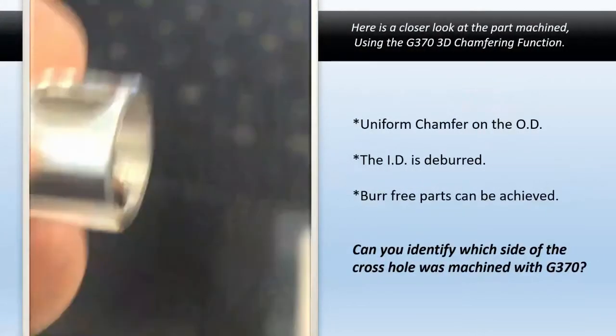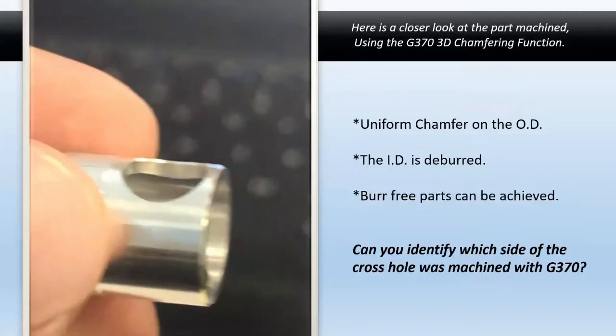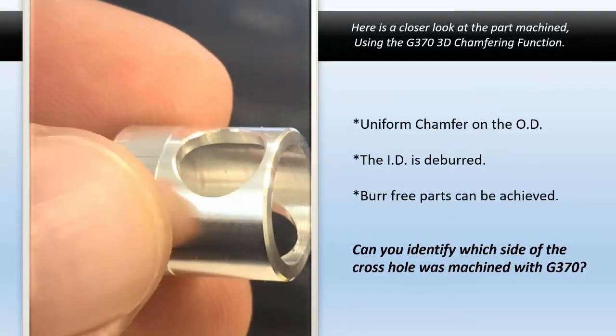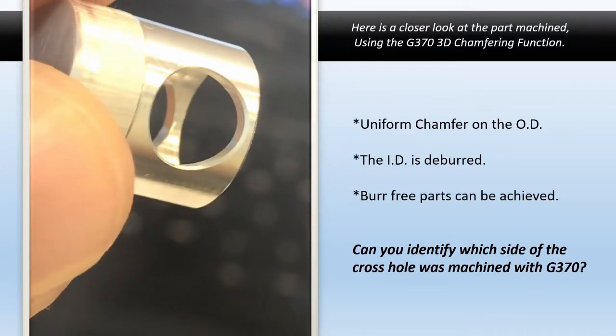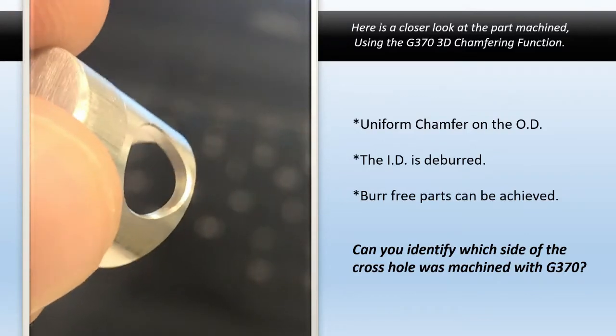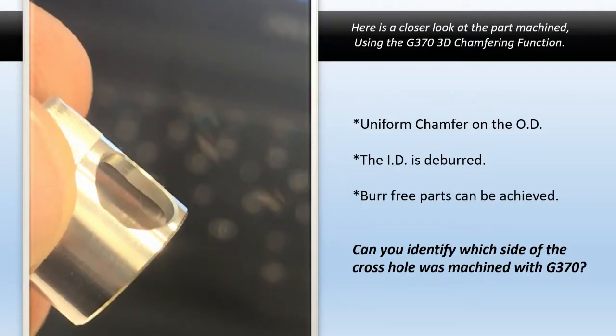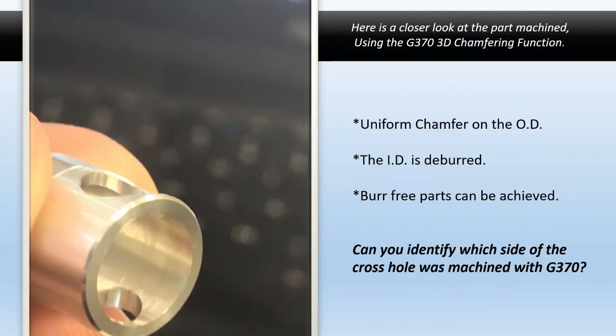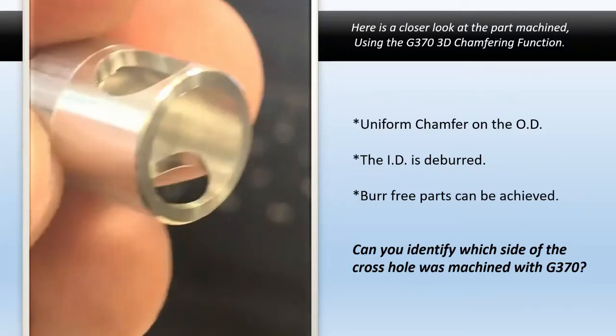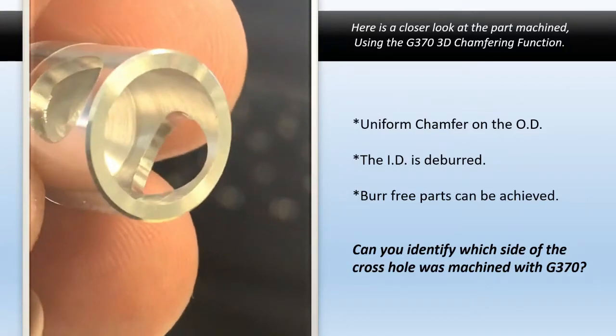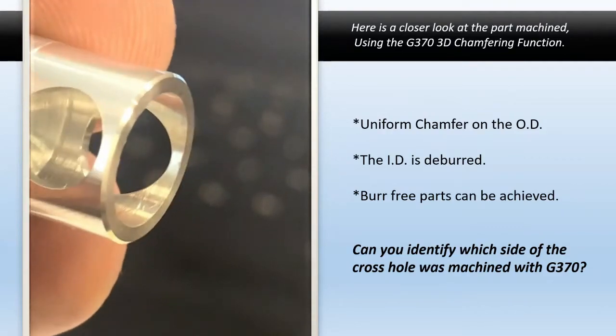As you can see from this video, the chamfers are very uniform. They're not heavy on the ends and light on the edges, very uniform and simple. The function does not rotate the C-axis; however, it holds C-axis and rotates X, Y, and Z around to maintain the uniform chamfer.